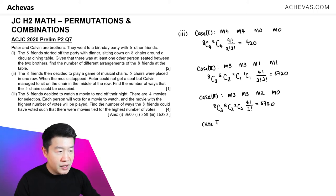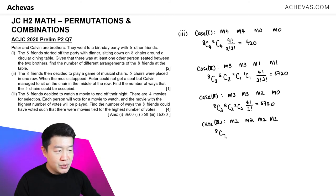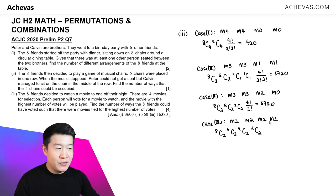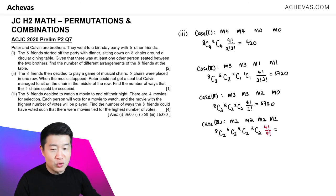There's one last case — case 4 — where all four movies each get 2 votes. Out of 8, choose 2; then 6 choose 2; then 4 choose 2; then 2 choose 2. It is not really necessary to do any additional arrangement because the movies all receive identical vote counts, so 4! divided by 4! equals 1. This gives 2,520.